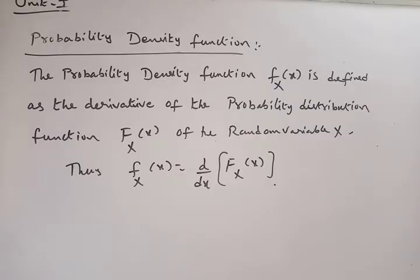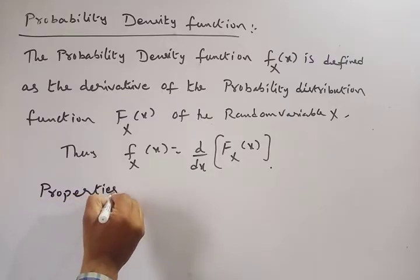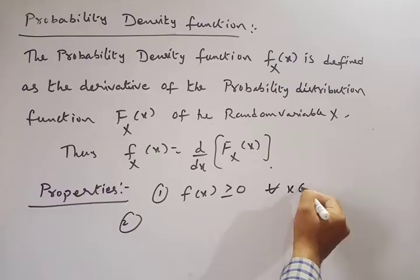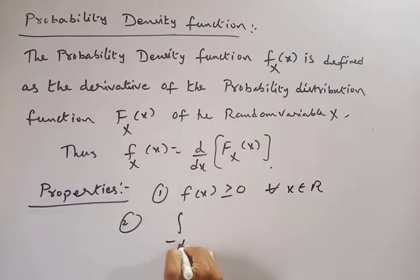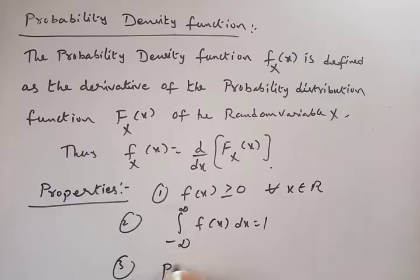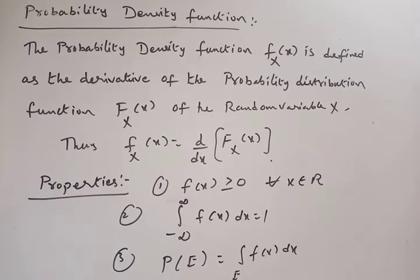What are the properties of the probability density function? First property: f(X) is greater than or equal to zero for every X belonging to the real numbers capital R. Second property: the integral from minus infinity to infinity of f(X) dX is equal to 1. Third property: the probability P of event E is equal to the integral over E of f(X) dX.